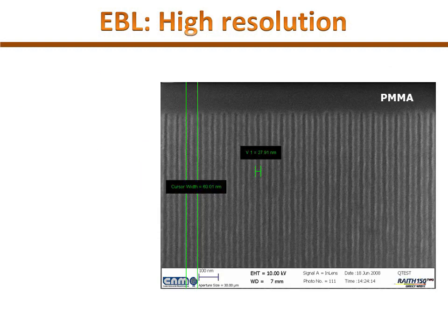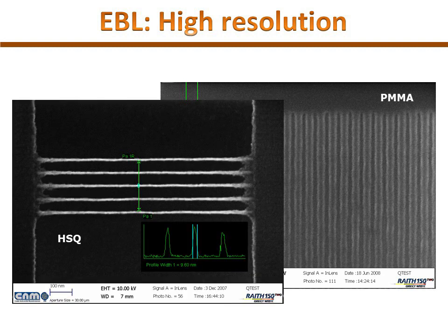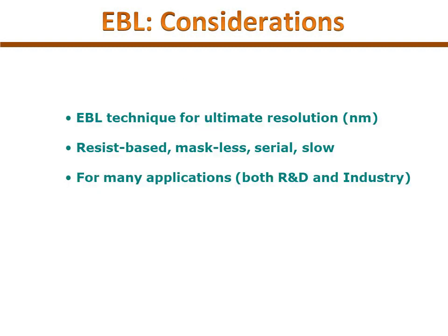In this slide, we can see two examples of e-beam lithography over PMMA and HSQ, which allow us to obtain very narrow lines. To summarize: e-beam lithography allows us to achieve nanometric resolution limits, requires electrosensitive resist, allows a maskless process when the lift-off approach is used, and is used both in research and industry. However, because it is a serial process, it is not suitable for mass production.